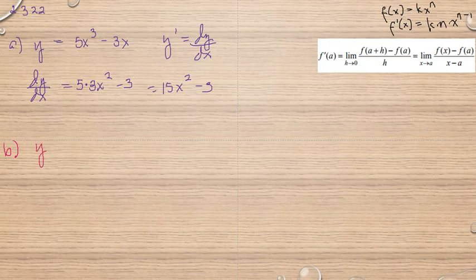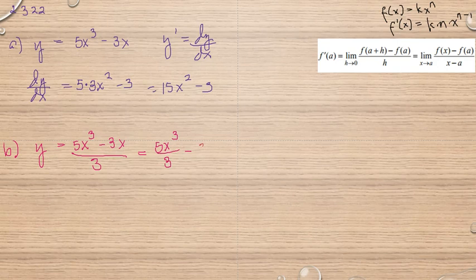Så har jag y, elika med 5x of 1 till 3, så tar jag med 3x, men nu dividar jag med 3. Så jag skulle sätta isär den, så har jag 5x of 1 till 3, dividar med 3, dividar med 3x. Och så tar jag med 3x, dividar med 3. Så nu skulle jag ge mig 5 tredje delar, x of 1 till 3, så tar jag med x.